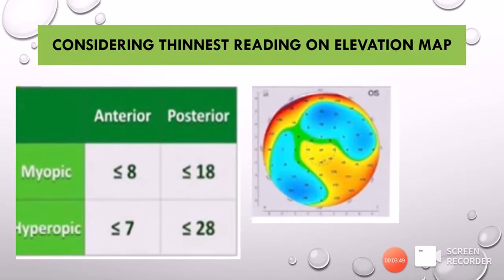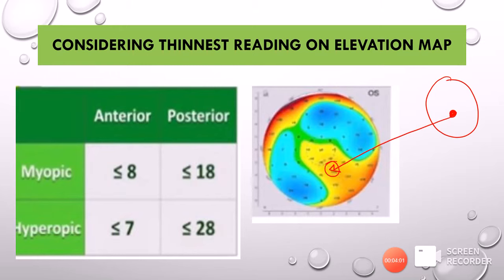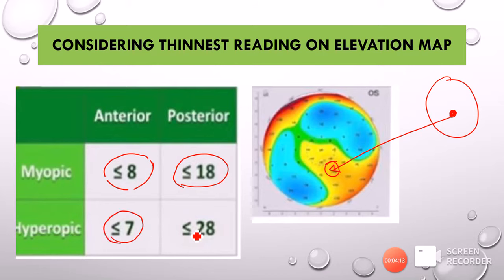Another important step on the elevation map is to find the location of the thinnest point on the pachymetry map and find the corresponding elevation of that thinnest point on the elevation map. In myopia, the anterior elevation map at this point should be less than 8 and the posterior elevation map less than 18. In hyperopes we take it as 7 and 28. So if values exceed 8 and 7 on the anterior, or 18 and 28 on the posterior, in myopes and hyperopes respectively, it is a risky case.